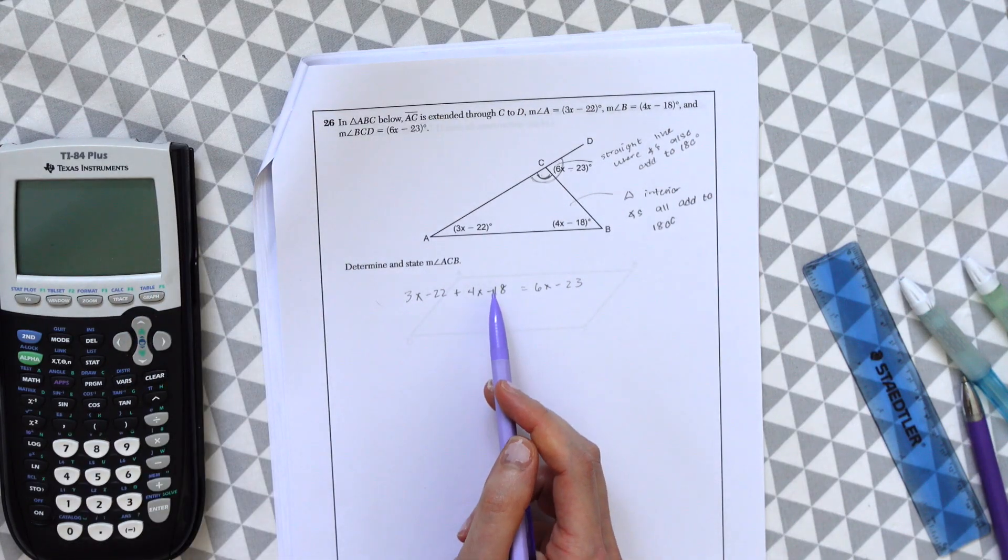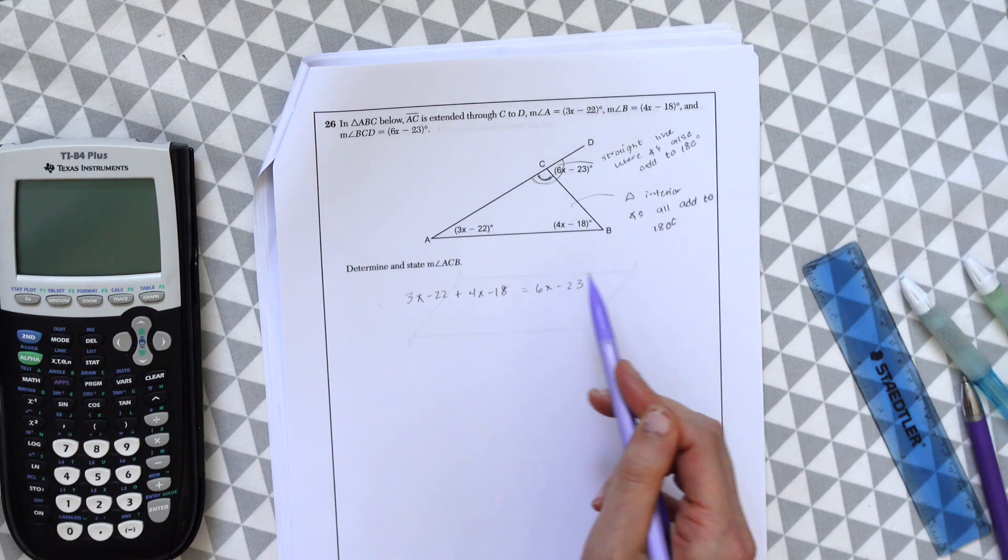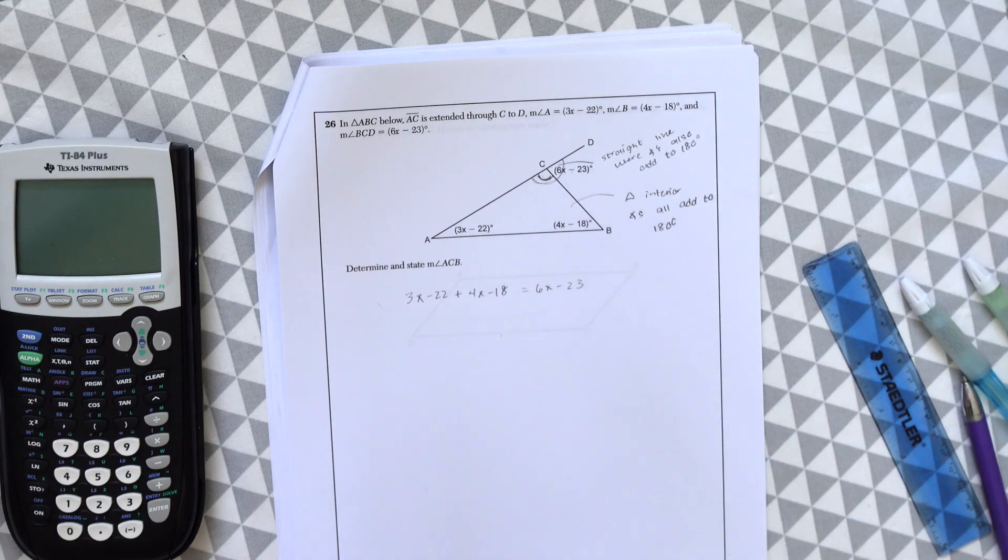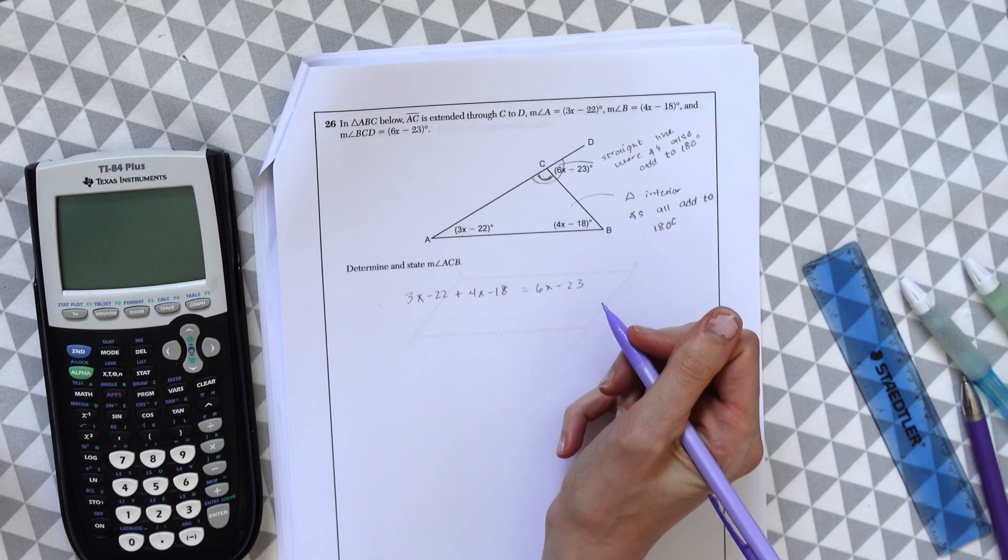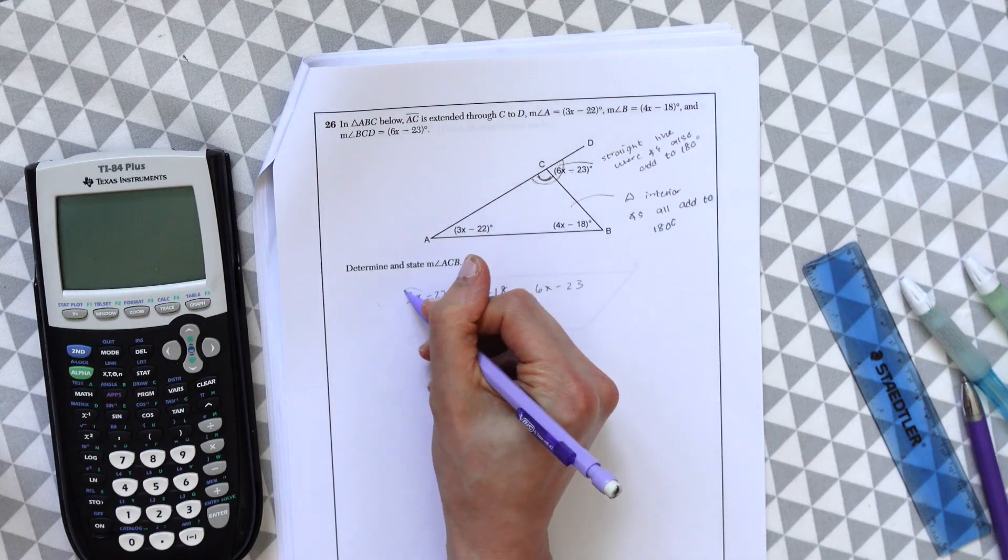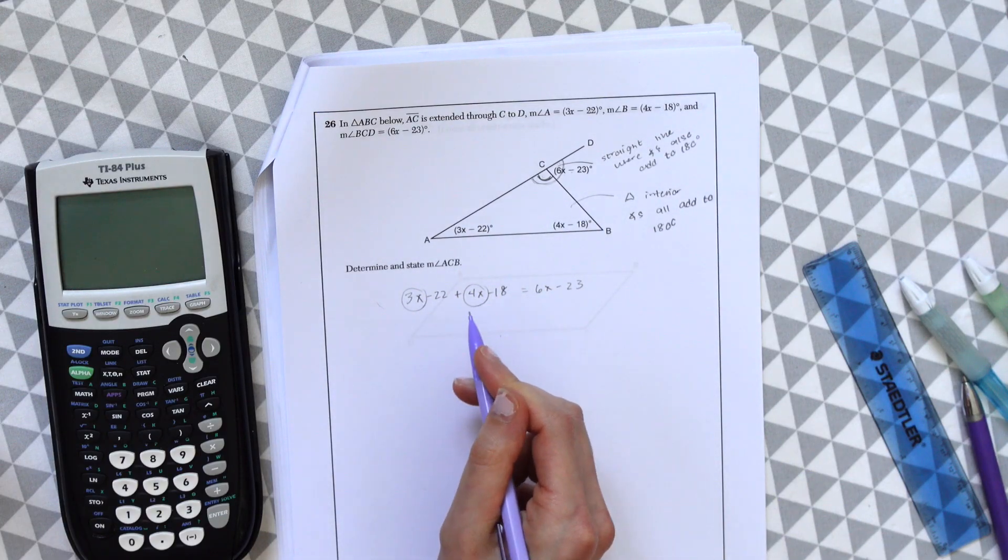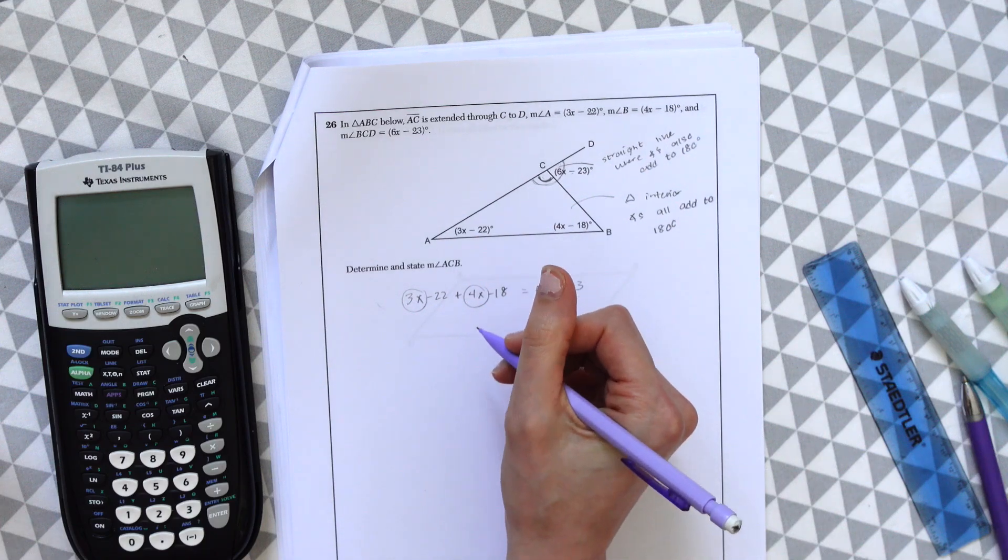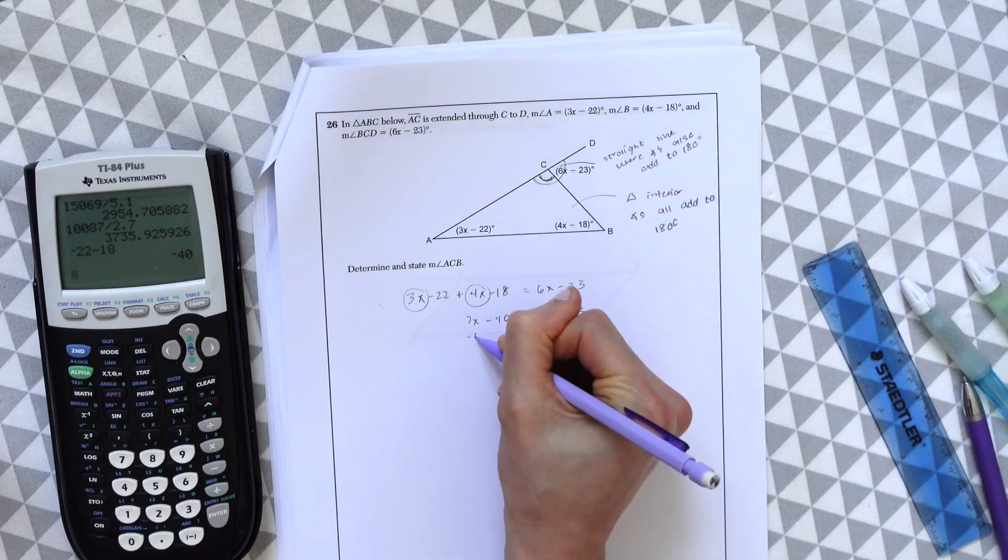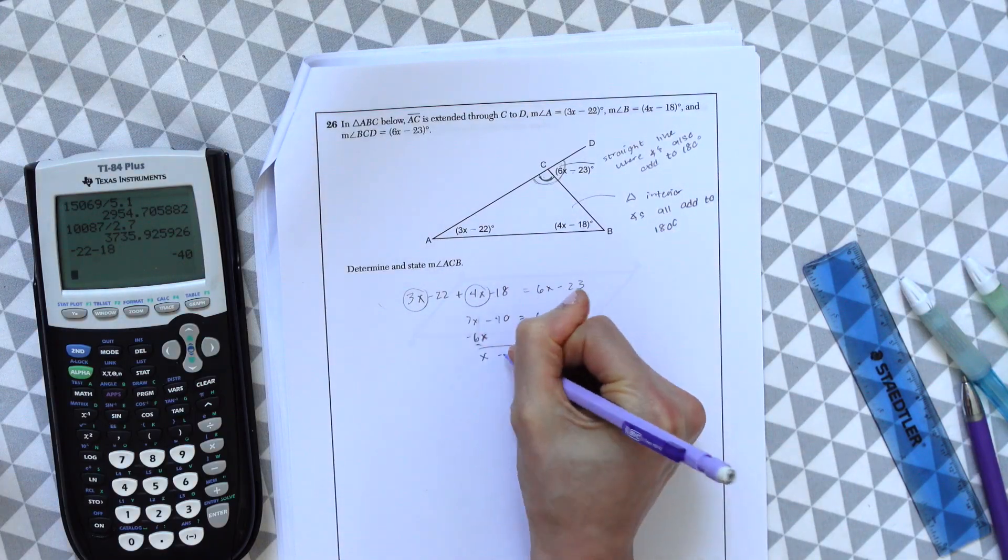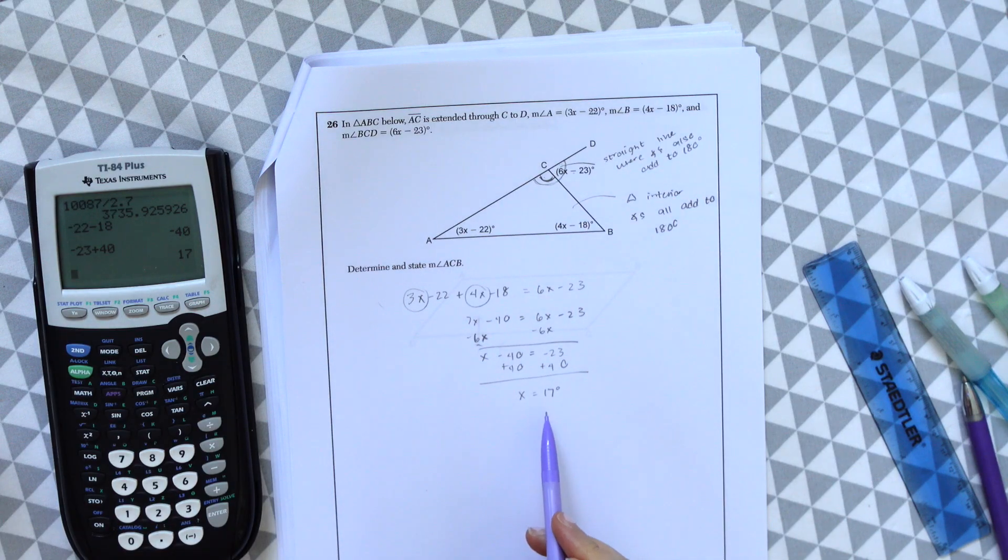And we know that because once we add angle C to this left part of the equation, we'd get 180 degrees. And we know that if we add angle C on the right side of the equation, we'll also get 180 degrees. And now we just need to solve this algebraically. So just adding the x values together, the same with the same value variables. We know x is equal to 17 degrees.